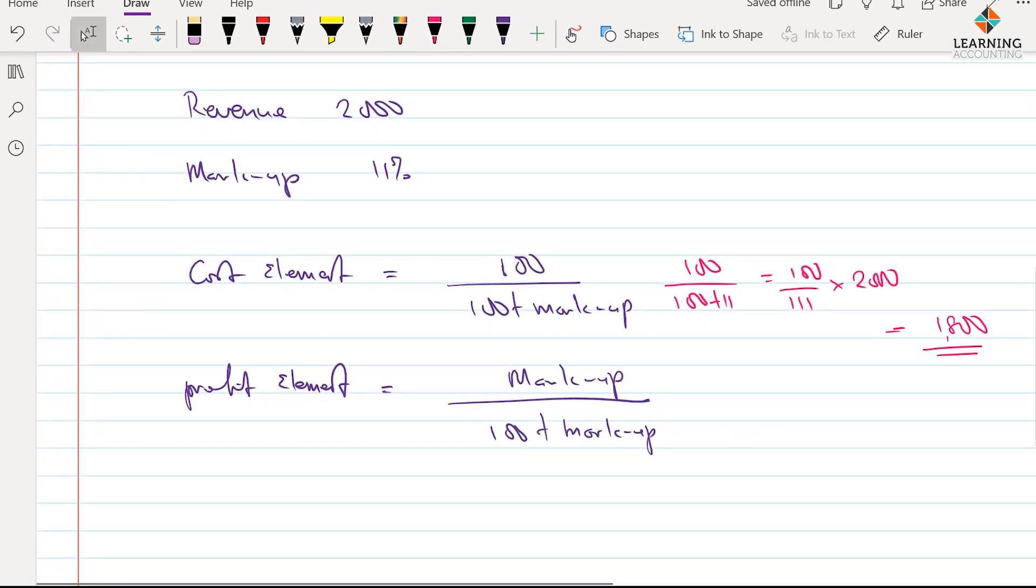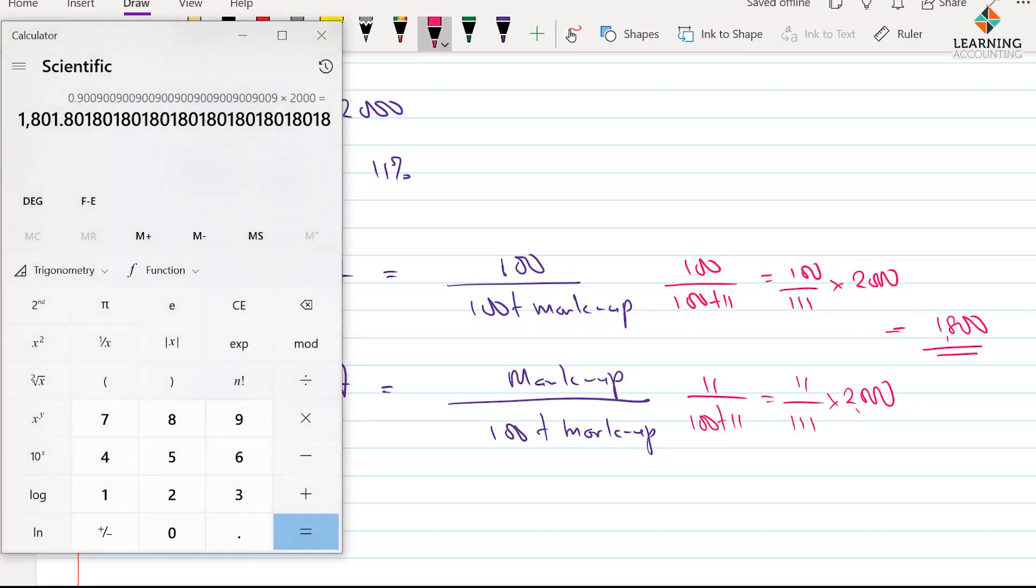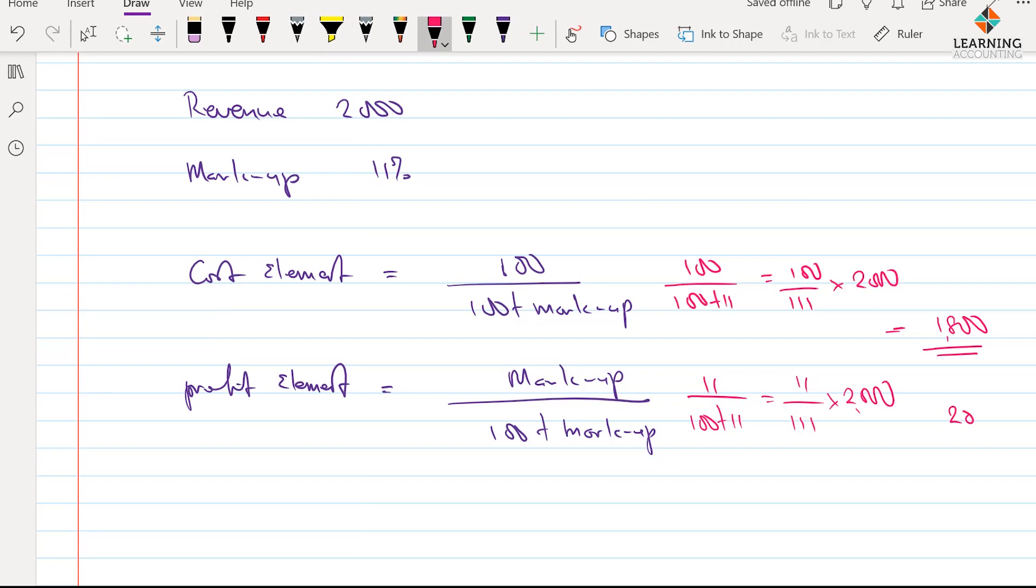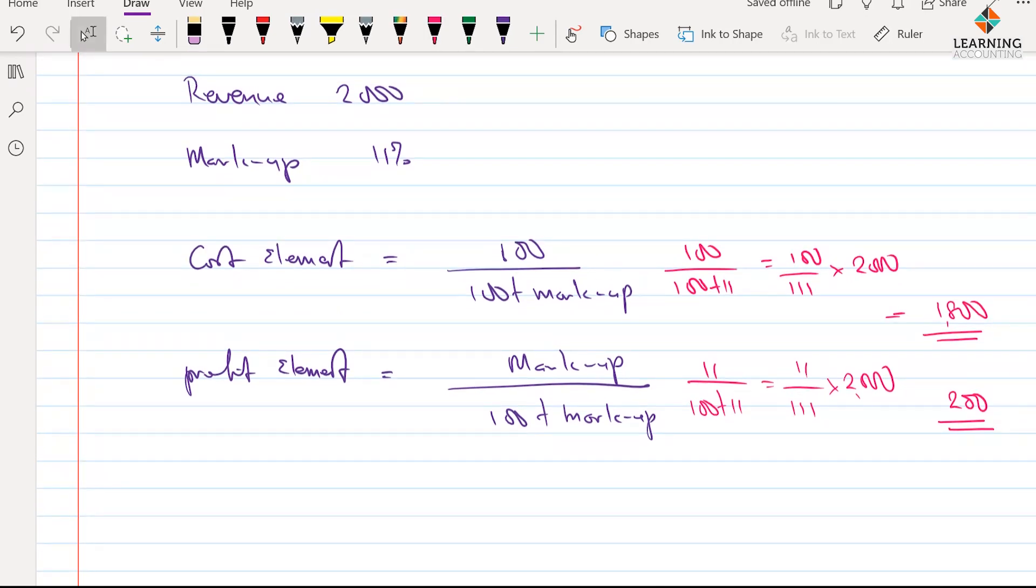And if it is the profit we are looking for, then we have 11 over 100 plus 11, which is 11 over 111, and multiply by 2,000 again. And if we do that, we have 11 divided by 111, multiply by 2,000. And that gives us, of course, like I've mentioned, it's an approximate. So, we have it to be 200. Now, this is in respect to having revenue and markup. And it depends on the information given in the question. You might want to calculate the cost element or you might want to calculate the profit element as the case may be. And this one you find mostly in consolidated financial statement style of questions.